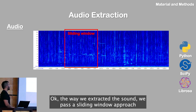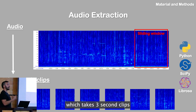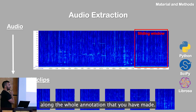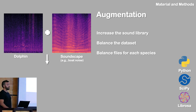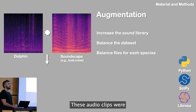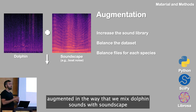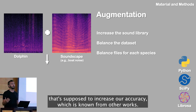The way we process the sound is through a sliding window approach, which takes three-second clips along the whole annotated recording. It will produce three-second clips with specific parameters. These audio clips were augmented by mixing the dolphin sound with soundscape recordings, which is known from other works to increase accuracy.